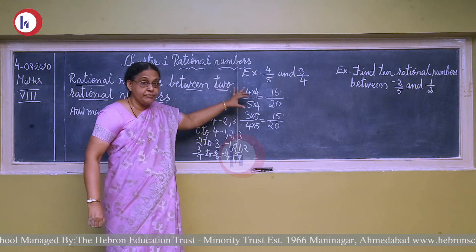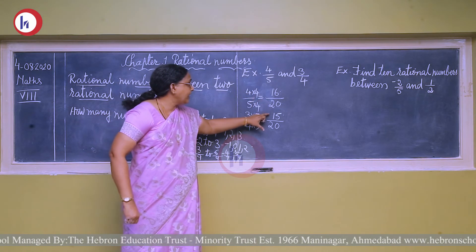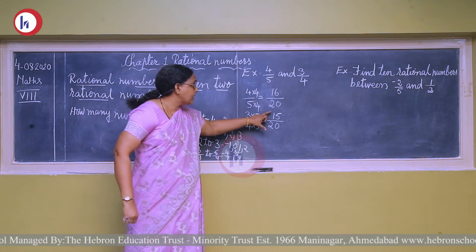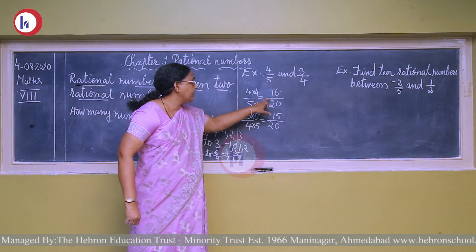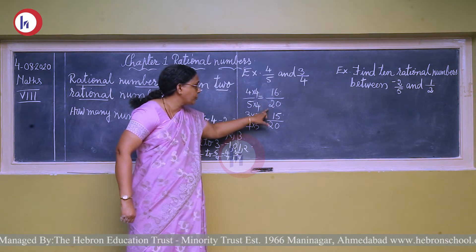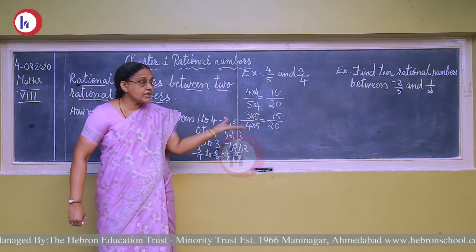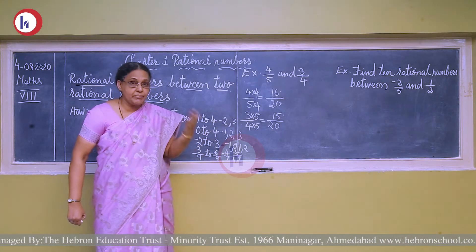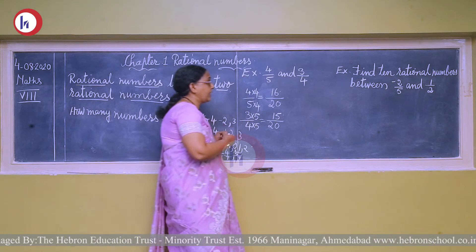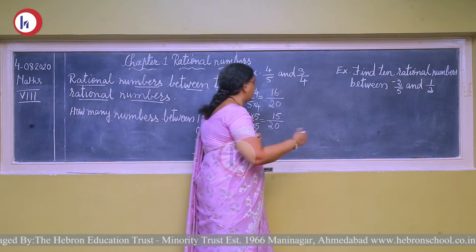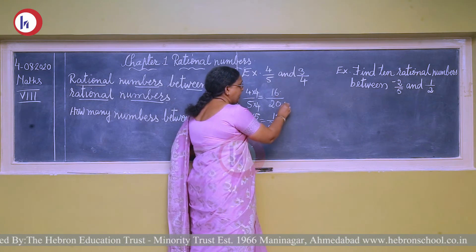To make the denominator the same, find the LCM of 5 and 4. There are no common factors, so just multiply the denominators: LCM is 5 × 4 = 20. Now 4 upon 5 — to make the denominator 20, multiply 5 by 4, so multiply the numerator by 4 also: 4 × 4 = 16, giving 16 upon 20. Similarly, 3 upon 4: multiply denominator by 5 to get 20, and numerator by 5 to get 15, giving 15 upon 20.